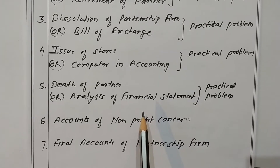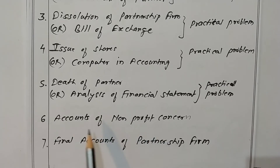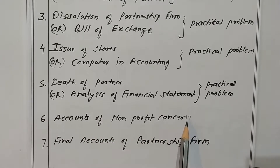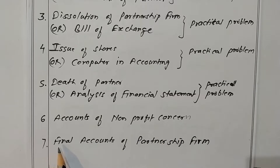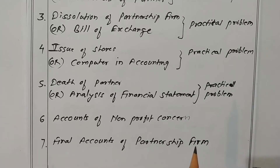Question six is a compulsory question with no option — it covers accounts of non-profit concern. The last, question seven, is the final accounts of partnership firm, also compulsory with no option. This is the complete structure of the model question paper.